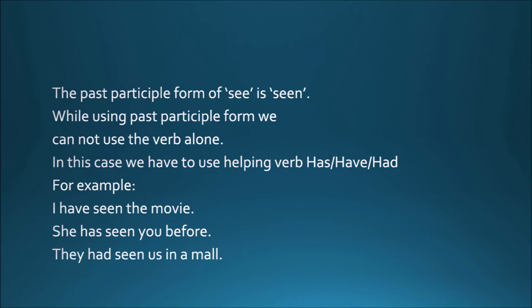We have to use a helping verb with the past participle form. The helping verbs has, have, and had are used with the past participle form. For example: I have seen the movie. She has seen you before. They had seen us in a mall.